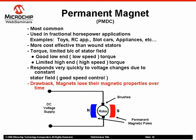Permanent magnet brush DC motors are the most common. These motors use permanent magnets to produce the stator field. They are generally used in applications needing fractional horsepower such as toys, radio controlled hobby applications, electric slot cars, appliances, etc. It is more cost effective to use permanent magnets than wound stators because they are cheaper to manufacture.